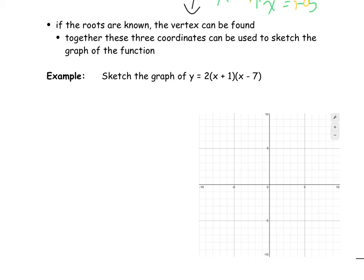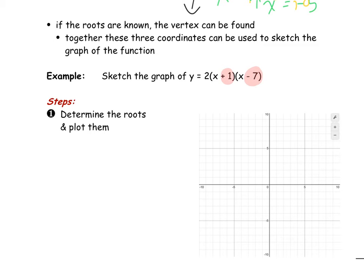Let's break this down into steps. I've pulled up a Cartesian plane from Desmos. Step one: determine the roots and plot them. From this equation I can tell that the value of R is negative 1 and the value of S is positive 7. So I have one root at x equals negative 1 and another root at x equals positive 7, and I'll go ahead and plot them.